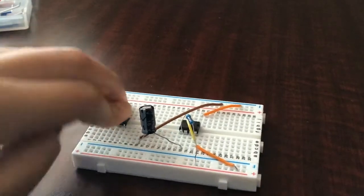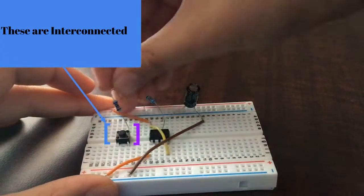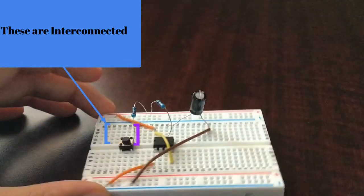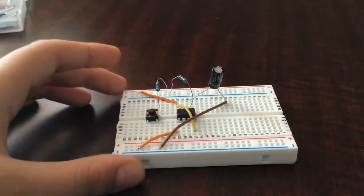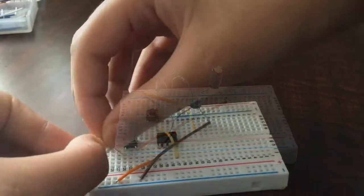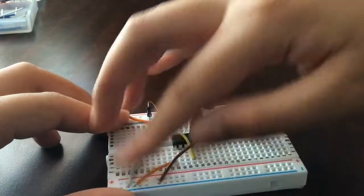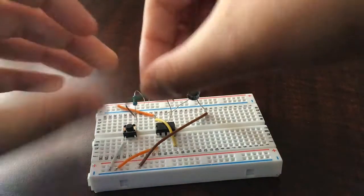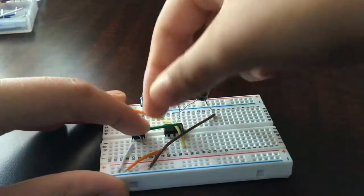Place a push-button switch on the breadboard and connect one of its interconnected pins to the positive rail via a 10 kilo ohm resistor. The other interconnected pin connects to the ground, and the same pin with the 10K resistor also connects to pin 2.